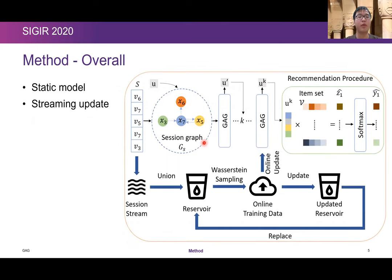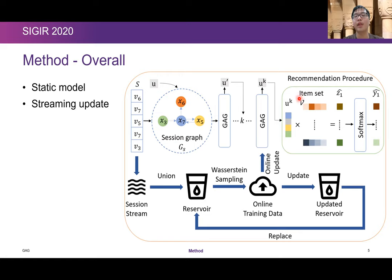Here we give an overview of our proposed model. It can basically be divided into two parts. The first part is the static model, which begins by converting a session into a session graph. We then propose our GAG module to update the session graph and calculate an updated global attribute U into UK. After we have UK, we compare it with all items in the item set to calculate the recommendation score. For the streaming updates, our model follows a sampling and storage update pipeline using our reservoir.